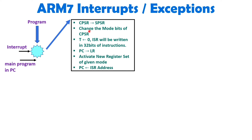Now whatever things are happening, that is with respect to this interrupt only. Service to this interrupt should happen in ARM state only, so the T-bit should be equal to 0. In ARM state, 32-bit instructions are available, and the ISR — interrupt service routine — will happen in ARM state only. So ARM7 will make T-bit equal to 0. The original program's CPSR has the original T-bit, but that is already stored with SPSR, so to give service to ISR it will make T-bit equal to 0.